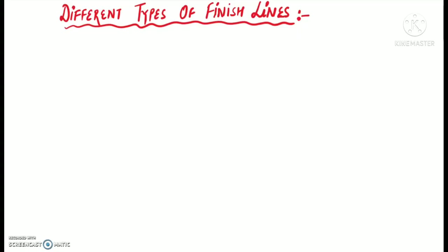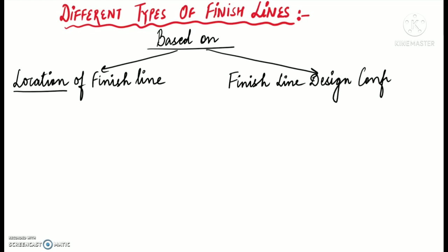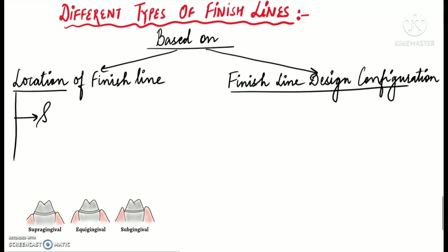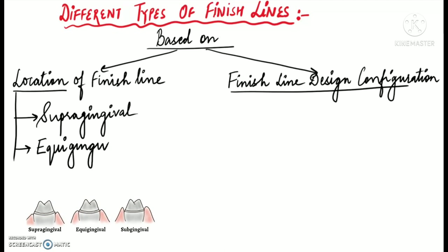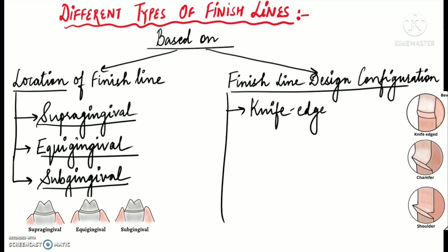So now we'll talk about the different types of finish lines depending upon their location, and also depending upon the finish line design or configuration. Based upon the location of finish line there are basically three types: first is supra-gingival, then there is equi-gingival, and finally the sub-gingival finish line.